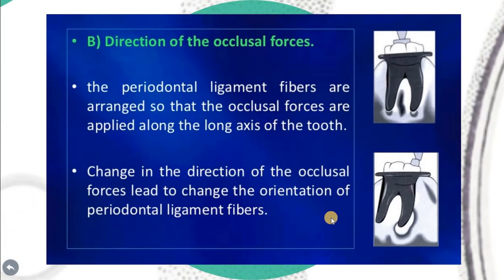Regarding the direction of occlusal force, the periodontal ligament fibers are usually arranged so that occlusal forces are applied along the long axis of the tooth. A change in the direction of occlusal force leads to a change in the orientation of the periodontal ligament. Horizontal and rotational forces are more likely to injure the periodontium.